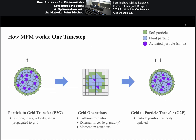In one time step you have three steps. You have two representations: a particle representation — basically an array of particles with their material properties, velocities, and positions. Then you do a particle-to-grid transfer. You have a grid representation, and you do a lot of the physical computation on that grid. Then you have a grid-to-particle transfer function, which puts the representation back into the particle representation for the next time step.